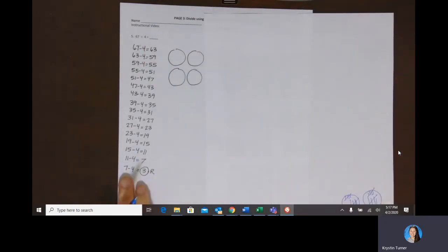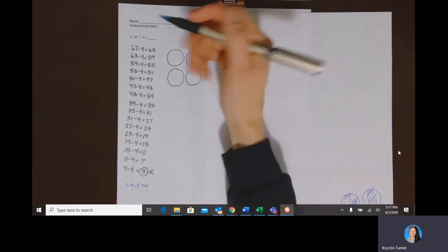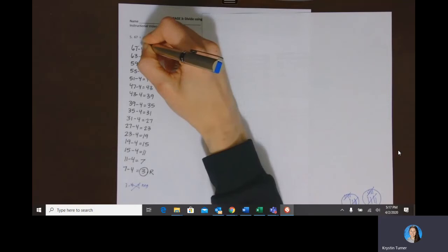And then at the bottom here, if you did it correctly, you would have seven subtract four is three. Now, if you try to do three subtract four, you would get a negative number. So we can't have a negative amount. So what that three, what's left over, is our remainder.